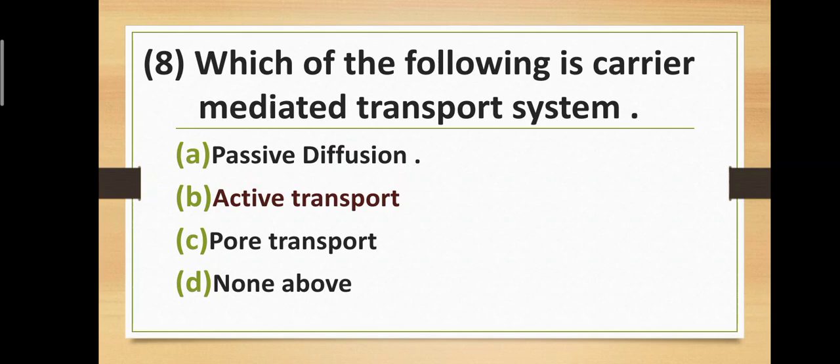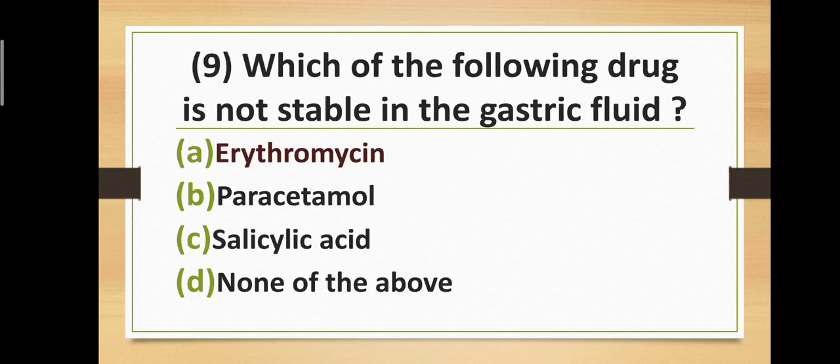Question number eight: Which of the following is a carrier-mediated transport system? Option A: passive diffusion. Option B: active transport. Option C: polar transport. Option D: none of the above. The correct answer is option B — active transport. Active transport is a carrier-mediated transport system.